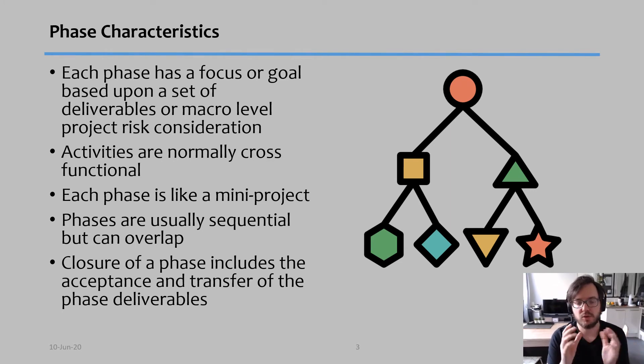And each phase, you have to look at it as a mini project. There's going to be a budget for each phase, work for each phase, a schedule for each phase. Phases are usually sequential. In other words, phase two will come after phase one, phase three will come after phase two. This is the normal part, but sometimes they can overlap, which means that phase two might begin before phase one is 100% complete.